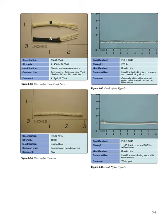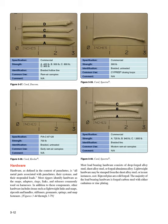Hardware: Hardware, as defined in the context of parachutes, is all metal parts associated with parachutes, their systems, and their suspended loads. Most riggers identify hardware as the snaps, adapters, rings, links, and releases commonly used on harnesses. In addition to these components, other hardware includes items such as lightweight links and snaps, ripcords and handles, stiffeners, grommets, springs, and snap fasteners.